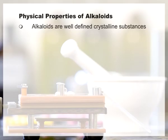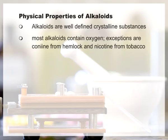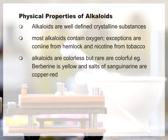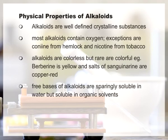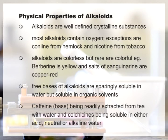Physical properties of alkaloids: Alkaloids are well-defined crystalline substances which unite with acids to form salts. In addition to the elements carbon, hydrogen and nitrogen, most alkaloids contain oxygen. Exceptions are coniine from hemlock and nicotine from tobacco, which are oxygen-free and are liquids. Generally alkaloids are colorless, but rare exceptions are colored — for example berberine is yellow and salts of sanguinarine are red. The free bases of alkaloids are sparingly soluble in water but soluble in organic solvents.